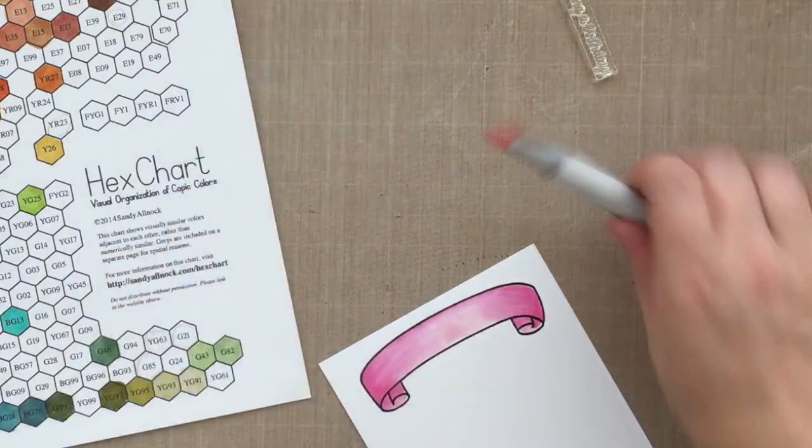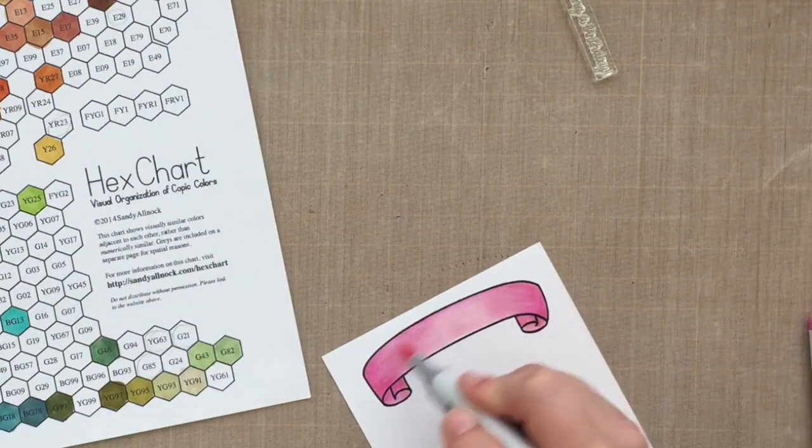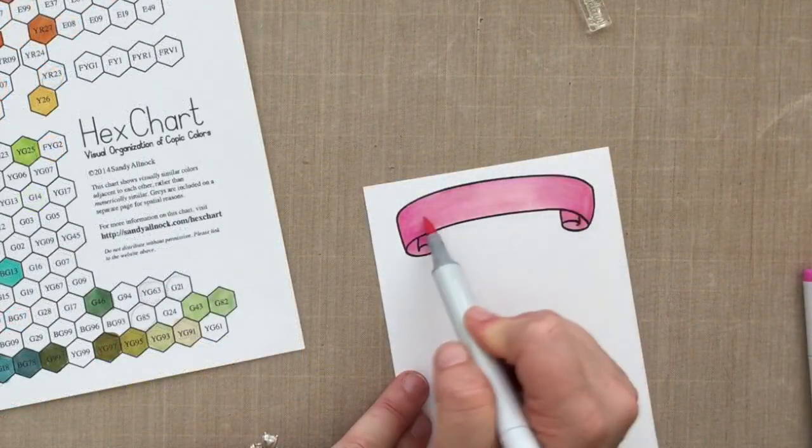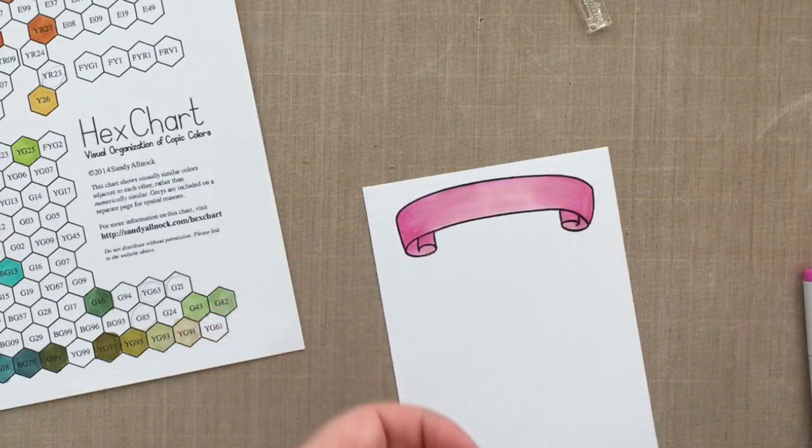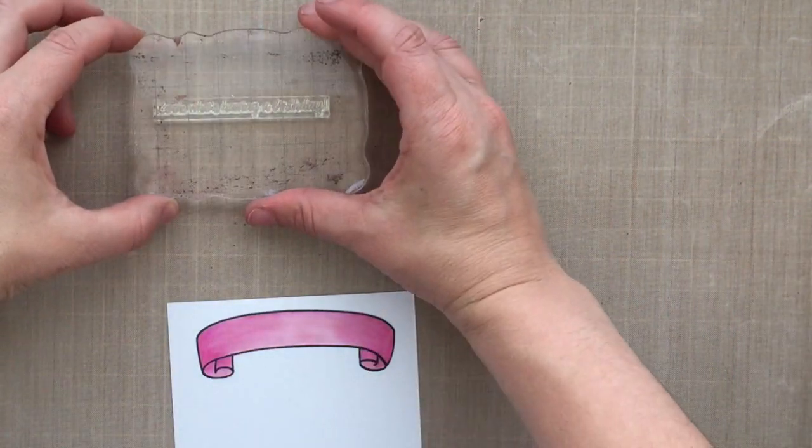I am not a Copic expert at all. That's why my chart is pretty sparse there. I don't have a lot of colors, I have what I need. But I just color. I'm sure there are proper ways to do this. There are classes you can take. There are free YouTube videos that you can find on proper ways to Copic color.